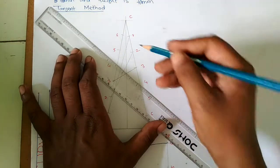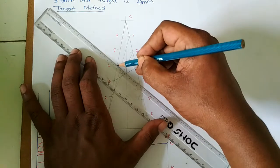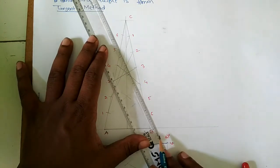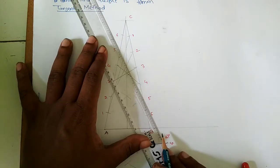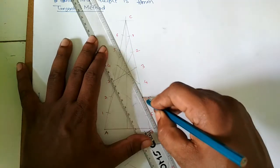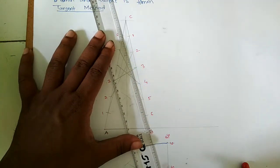In similar manner we will join 4-4 point, 5-5 point. Now we join 6-6 point.